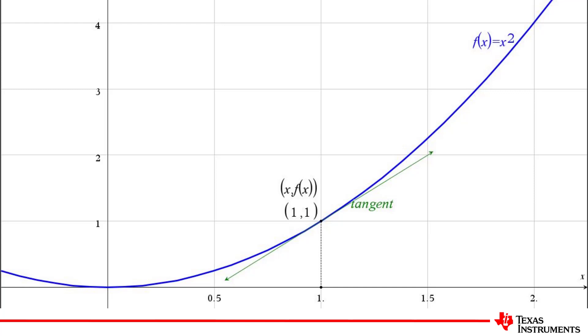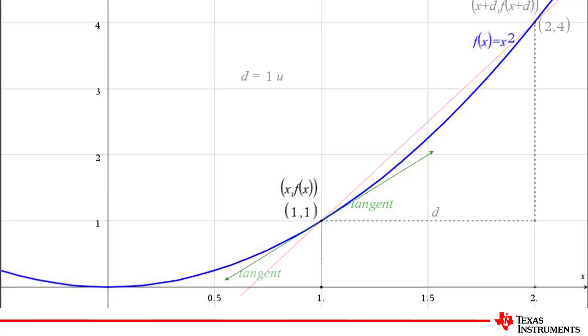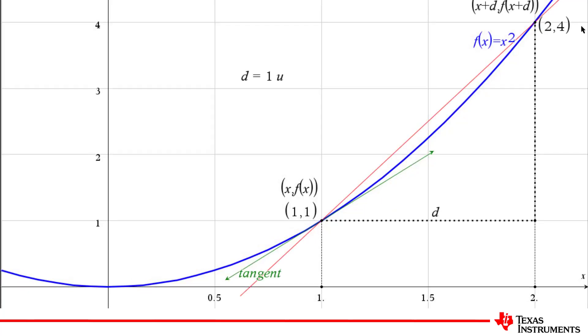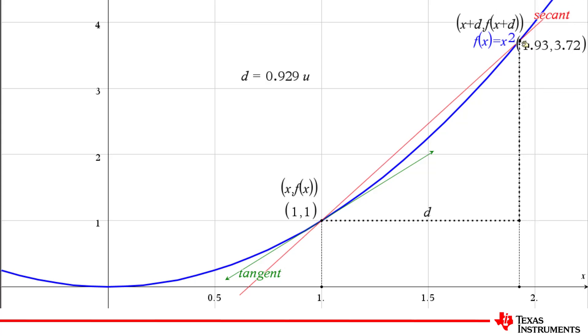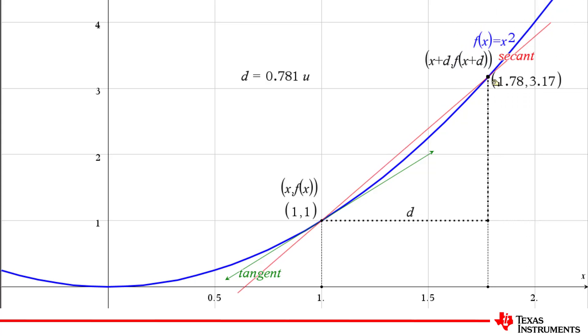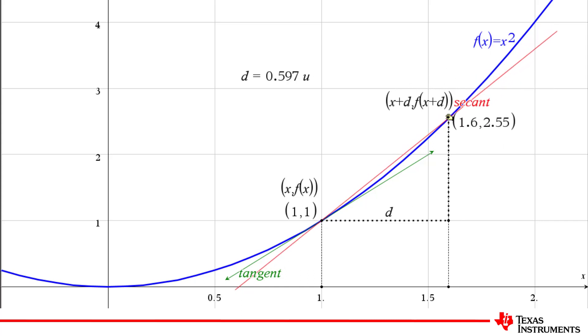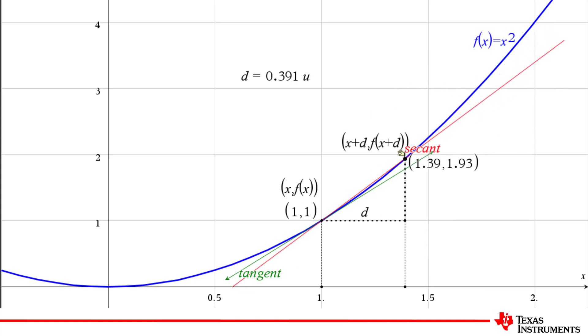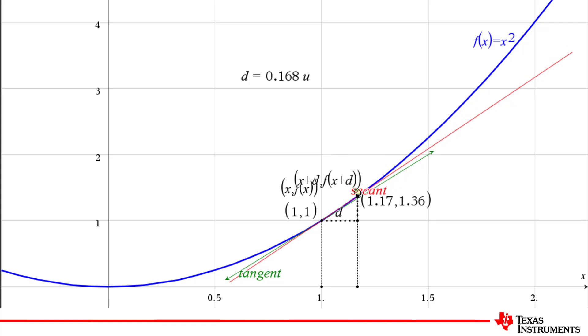We can calculate the gradient of a secant using rise over run. As we move the second point closer and closer to our point of interest, the gradient of the secant approaches the gradient of the tangent. As we do this, the d in the diagram is approaching zero.